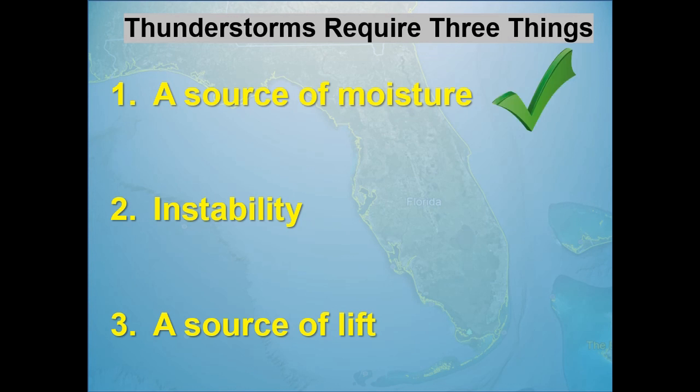So as we've seen in the last few minutes, all three ingredients required for thunderstorms are common here in Florida during the summer. This is why thunderstorms are in our forecast almost every day from June through September.